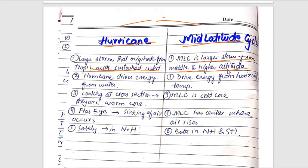Hurricanes derive energy from the waters, while mid-latitude cyclones derive energy from horizontal temperature differences. Looking at the cross section: hurricanes have a warm core, mid-latitude cyclones have a cold core.